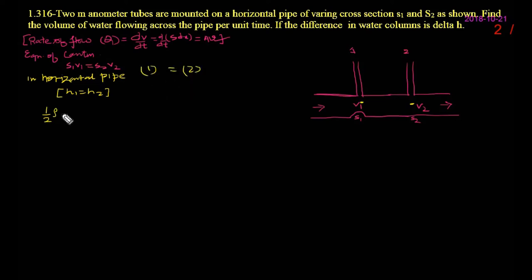That's why only Bernoulli's theorem concept you can use. I am just comparing one point with two. Then I can write half rho V2 square plus pressure at 2 is equal to half rho V1 square. Pressure at 1, I can write P1 and pressure at 2, I can write P2.